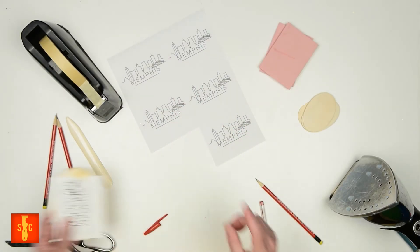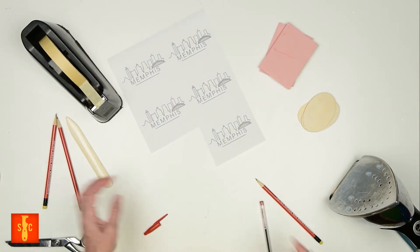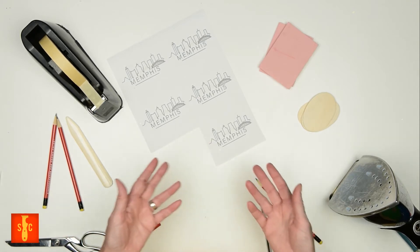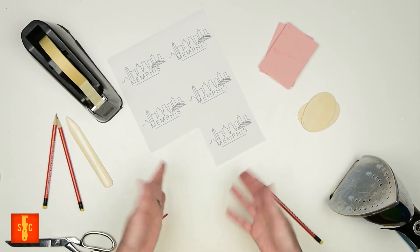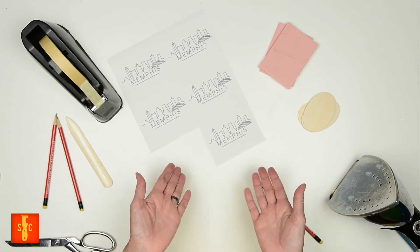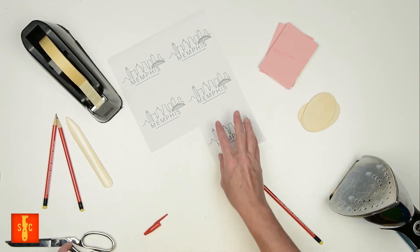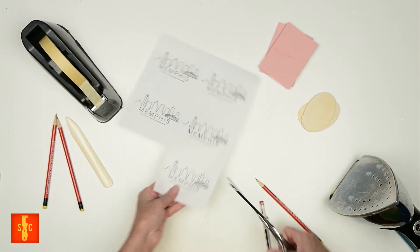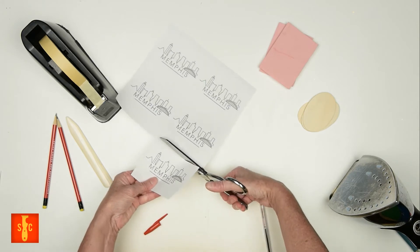Now our second method is used when you want your image to transfer backwards. Now you might be asking, why would you want to do that? Well, it's especially good for when you're setting up for printmaking. So again, we're going to print our image on copy paper. I'm going to go ahead and cut one out. We're going to do that same image.